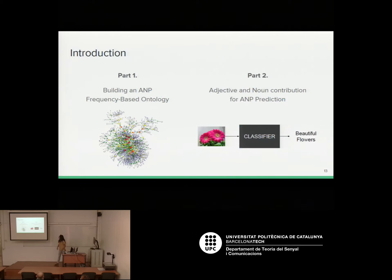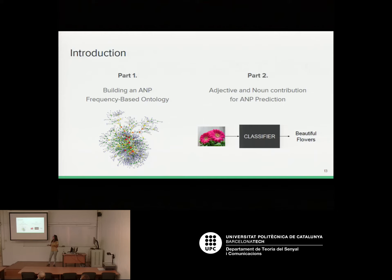This project has two separate parts: the first is about building an ontology for adjective-noun pairs, and the second is about studying adjective and noun contributions for ANP prediction. Since I'm presenting for a master's in computer vision and the first part is not directly related to vision, I'll give a brief overview of part one and focus on part two.